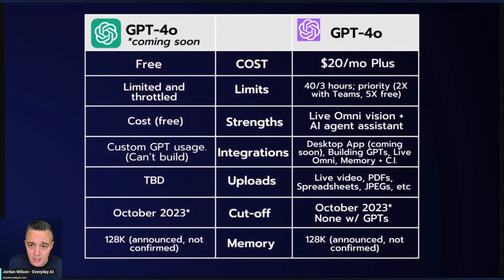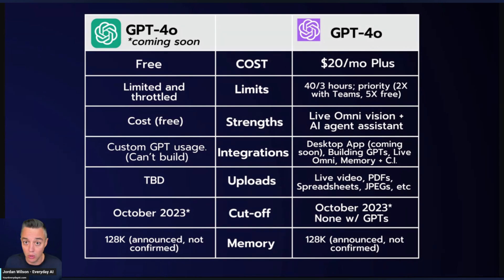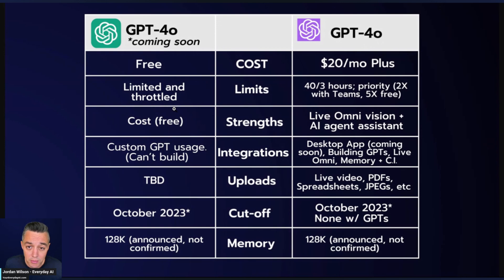The only thing that free users are going to get access to is the base model itself — none of the additional features and functionality that OpenAI demoed, the things that actually stole the show. Free users get access to none of that. So let's quickly go over the difference between ChatGPT free on the left-hand side and ChatGPT Plus on the right-hand side. Cost is obviously free versus $20 a month. The free version is going to be much more limited and throttled. OpenAI said that paid users of ChatGPT Plus will have five times the amount of usage.